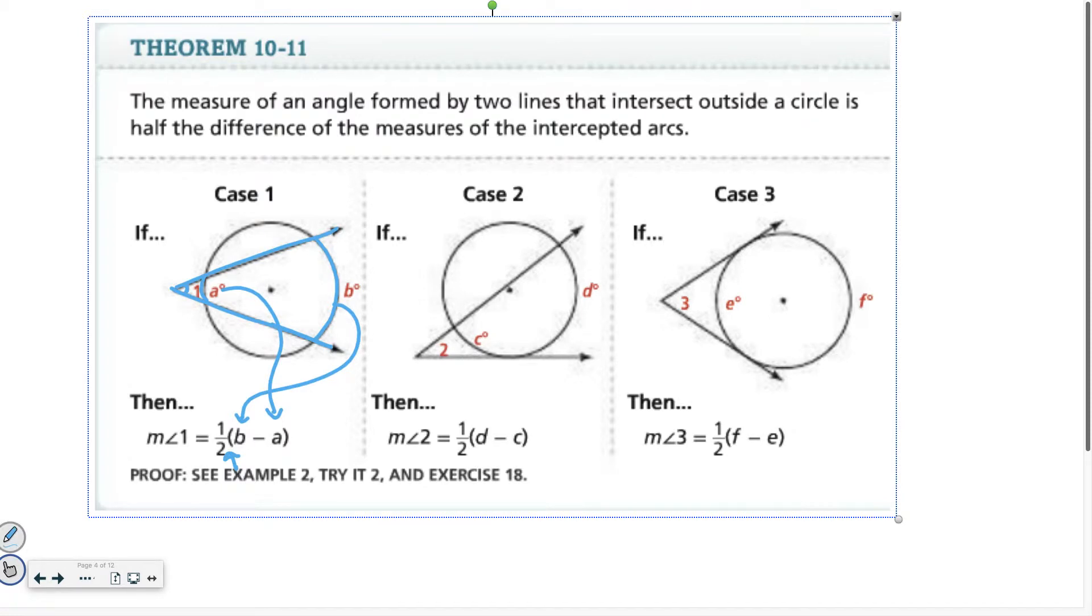Now, what if both lines are tangent? That's case 3. To find angle 3, I take the arc that's the farthest, subtract the arc that's the closest, and multiply by one half. This is a great thing to take a screenshot of, because it's nice to have this reference point that you can pull up this picture when you're doing your homework.